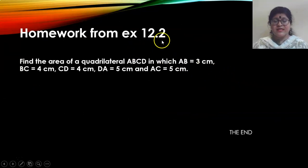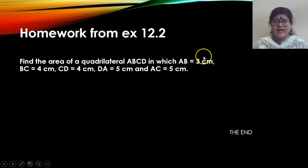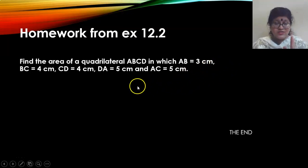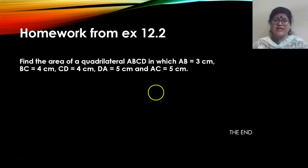Now for homework from exercise 12.2: find the area of quadrilateral ABCD using the given details. Draw the quadrilateral according to the information. Since no angle is mentioned as 90 degrees, you may need to use Heron's formula for both triangles. Try to solve it on your own in your assignment sheet or notebook. In the next video lesson we will complete a few more questions from exercise 12.2. Until then, goodbye.